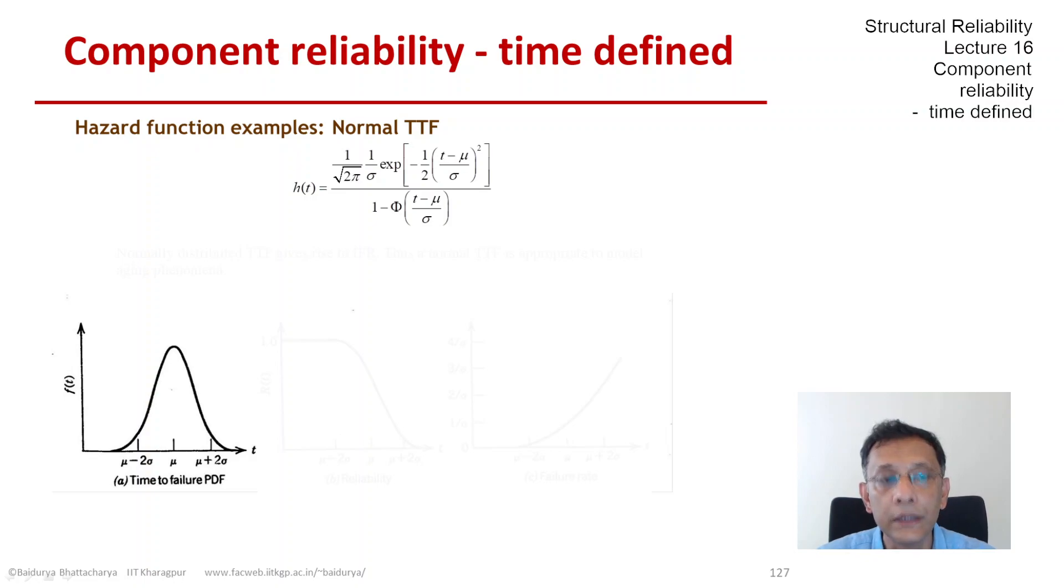So this is the density function centered on mu. And if mu is large enough, you can see that in relationship to sigma. So possibility of negative values is small, but we can still left truncate it.